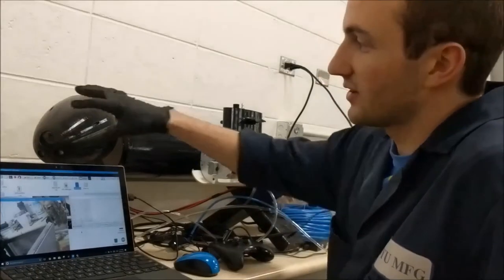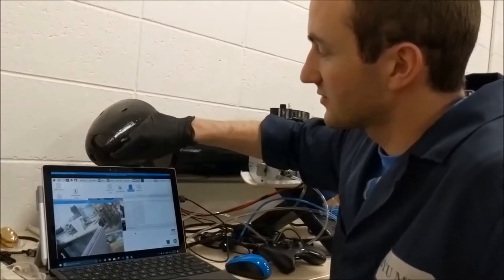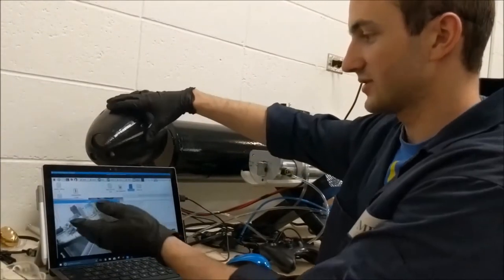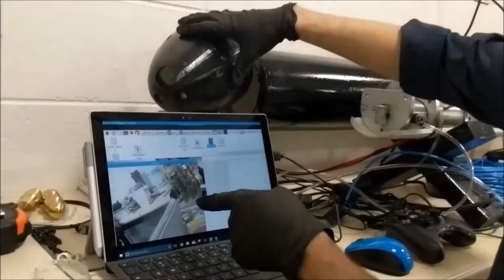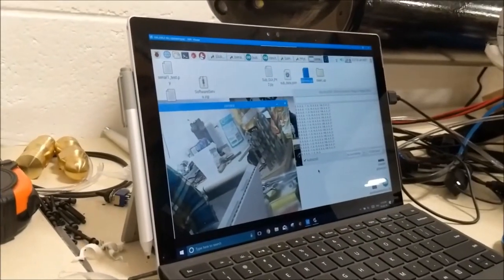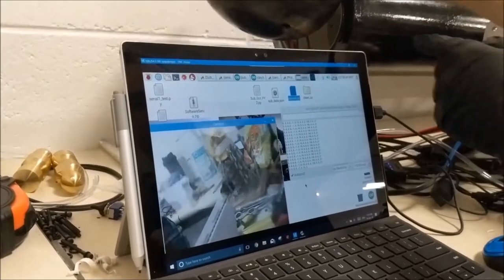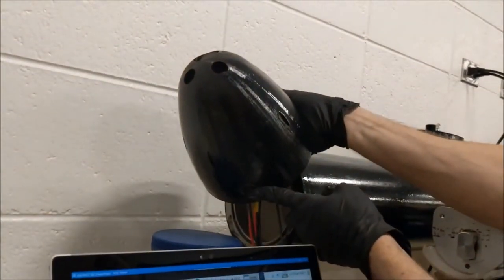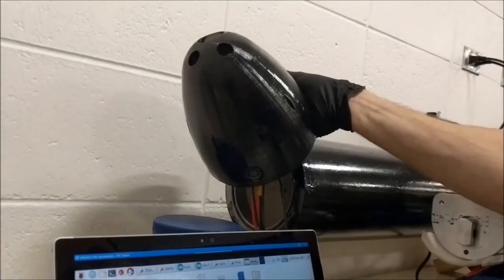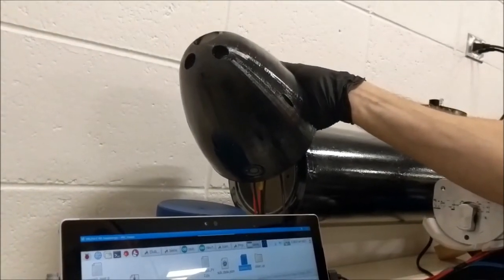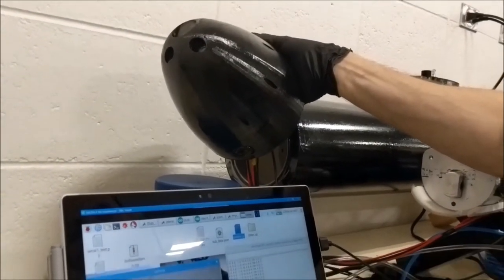So here in the nose we have the lights and the camera which is shown here with this video display, so that way we can see what the submarine is seeing while we are under the water. As well as under here is the ultrasonic so that we can see our depth to the bottom of whatever we are driving in.